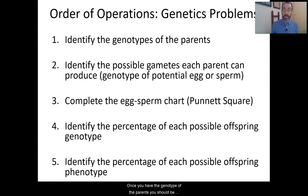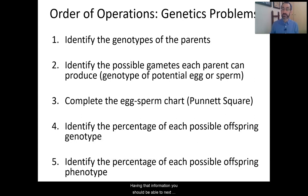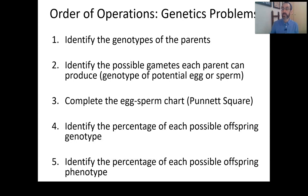Once you have the genotype of the parents, you should be able to identify the possible gametes that each parent produces — the possible genotypes of the egg or sperm. Remember with meiosis, you independently sort the different alleles, so in each egg or sperm you have one allele. Having that information, you can complete the egg sperm chart — the Punnett square — putting possible sperm on one side and possible eggs across the top, then filling out the rest. Once completed, you can identify the percent possibility of each possible offspring genotype.